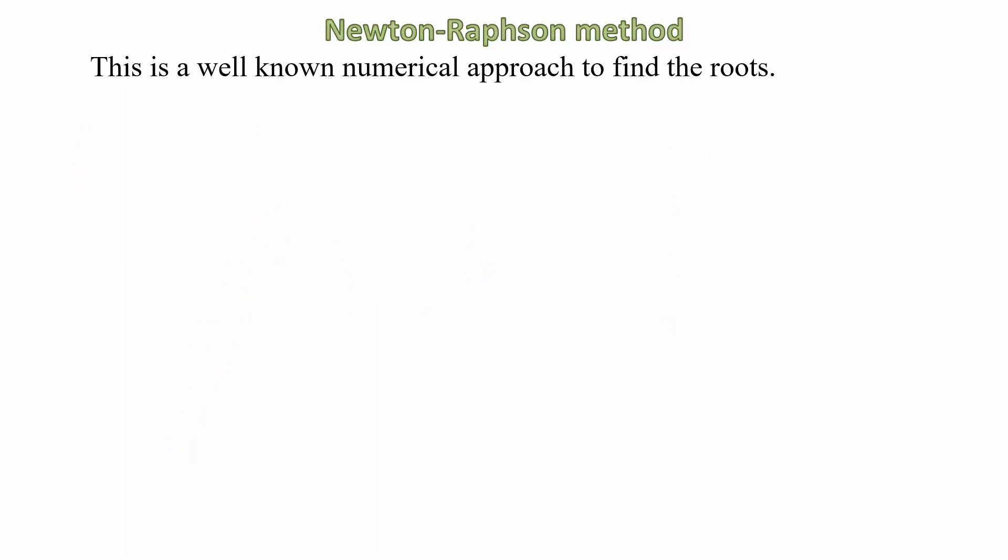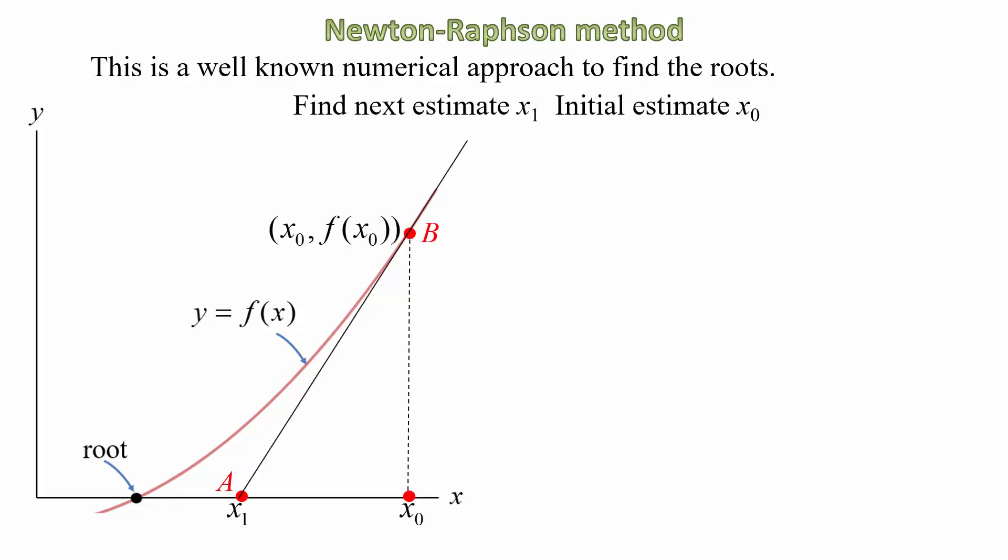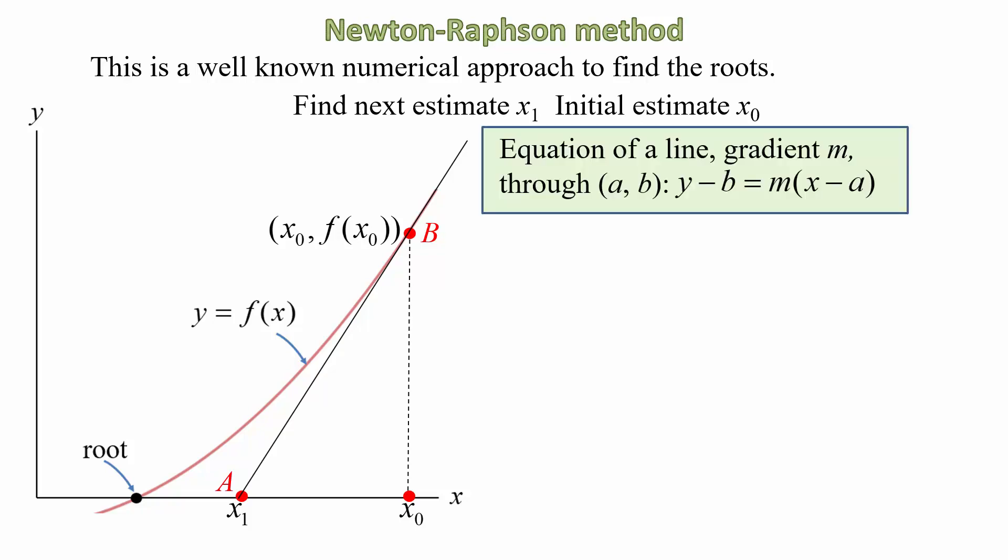The Newton-Raphson method is a very well known numerical method to find the roots of an equation. Let's develop the iterative process. We have our function f(x) and labeled is the root on the x-axis. We start by estimating a point close to the root which we will call x₀. What we do then is obtain the equation for the tangent AB at point B which is the y value of point x₀. When we do that, the x-intercept of the tangent line AB provides our second estimate for the root which is labeled x₁. In general, if a line passes through the point (A,B) then the equation is given by y - B = m(x - A) as you can see there in the rectangle.